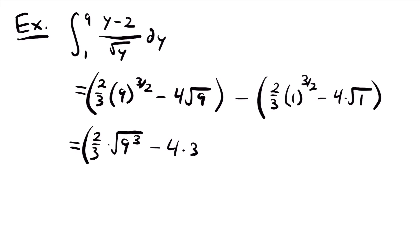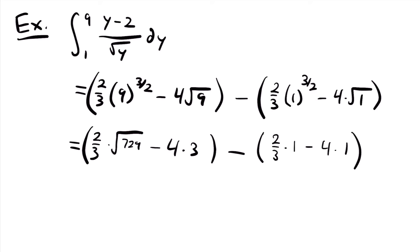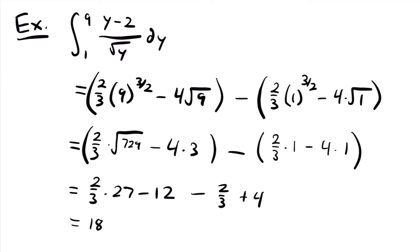The square root of 729 is 27. So we have two thirds times 27 minus 4 times 3 (since the square root of 9 is 3), minus the quantity two thirds times 1 minus 4 times 1. Distributing the negative, that becomes minus two thirds plus 4. Two thirds times 27 equals 18. Then negative 12 plus 4 is negative 8, and we still subtract two thirds. So 18 minus 8 minus two thirds equals 28 thirds.